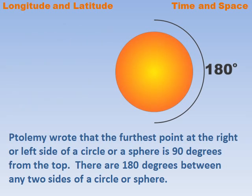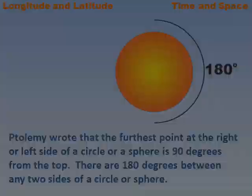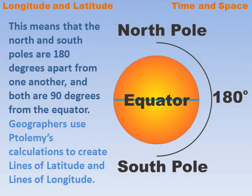There are 180 degrees between any two sides of a circle or sphere. This means that the North and South Poles are 180 degrees apart from one another, and both are 90 degrees from the equator.